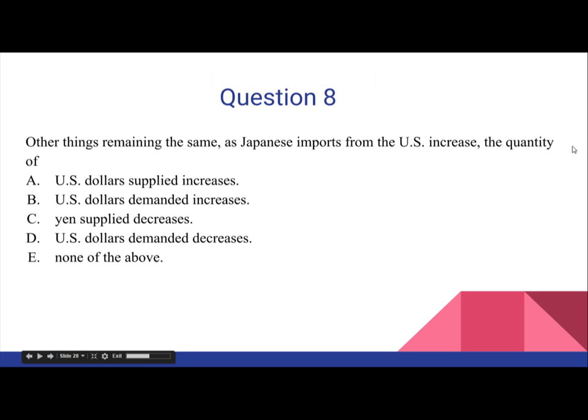Question 8. Other things remaining the same, as Japanese imports from the U.S. increase, the quantity of: A. U.S. dollars supplied decreases; B. U.S. dollars demanded increases; C. Yen supplied decreases; D. U.S. dollars demanded decreases; or E. None of the above.